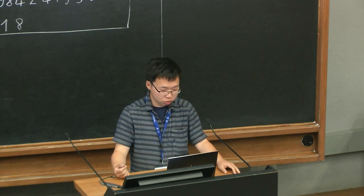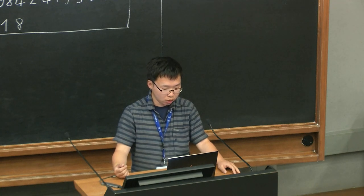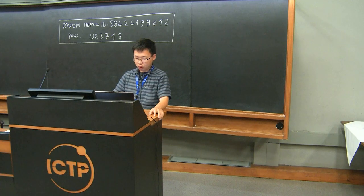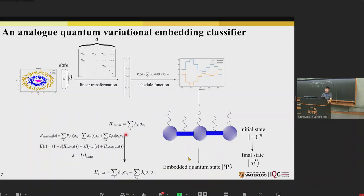A question from the chat asks whether there are obstacles to testing this approach on a quantum annealing device. The speaker clarifies that the Hamiltonian setting used is indeed a quantum annealing device — it anneals from the initial transverse Hamiltonian to a final longitudinal Hamiltonian, exactly like a quantum annealer. So there is no fundamental difficulty to trying it on an annealing device. Since an annealer runs in continuous mode, the speaker refers to it as an analog quantum computer.